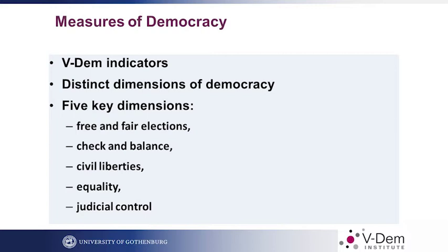Based on factor analysis, we found there are five distinct features of democracy. These five distinct features are: free and fair elections (quality of election) — whether elections are free, fair, and competitive; institutional check and balance, especially the power of the legislature and parliamentary power; civil liberties; equality; and judicial control.